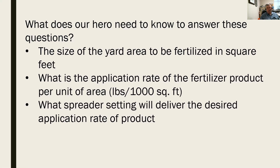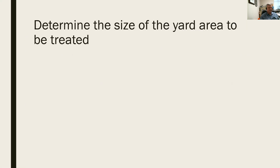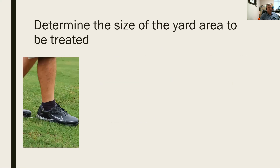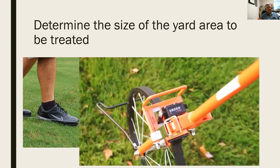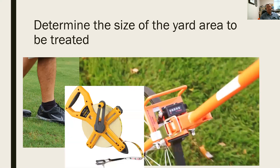Determining the size of the yard area can be fairly straightforward. You can measure it by pacing it off, using a measuring wheel, or a tape measure — just some way to accurately take physical measurements. Then, using math, calculate it. If you've got a square or rectangular-shaped yard, it's simple: length times width equals area in square feet. For more odd-shaped areas, other formulas are available.